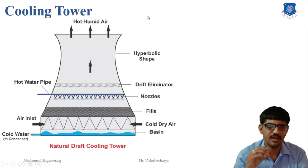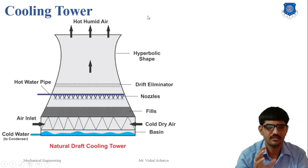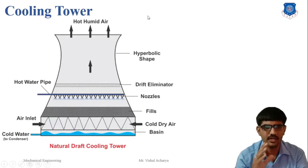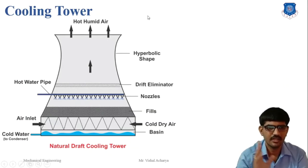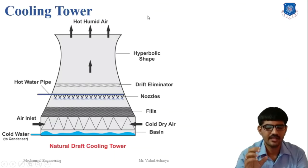In a power station like a steam power plant, a large amount of exhaust steam is generated by the steam turbine and passed to the condenser where the hot water is converted into cold water. The cold water used in the condenser is supplied by the cooling tower. The main purpose of the cooling tower is to spread the heat from the hot water, make it cool, and recirculate the water in the condenser.